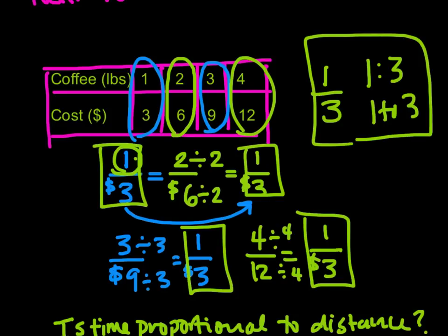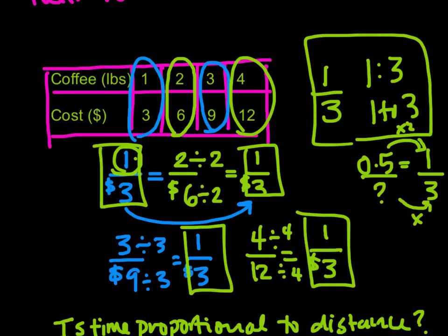So we could also say, well, for half a pound of coffee, how much would I pay? Well, looking at this constant of proportionality, this half a pound of coffee compared to 1 over 3, how do I get from 0.5 to 1? Well, I need to multiply it by 2. So 3 divided by 2, if we're going the other direction, 3 divided by 2 is 1.5. So I'm going to pay $1.50 for half a pound of coffee.